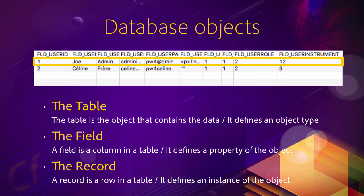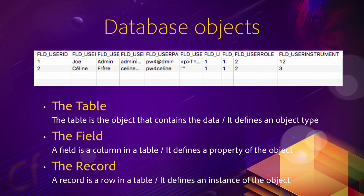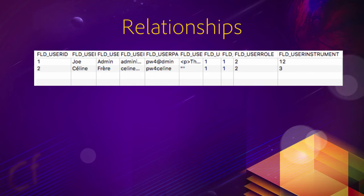A record defines an instance of the object. So in my database here, I have two users, meaning I have two different instances of the user object. Each of those two instances has all the properties of a user, but with different values. What makes a database really special is the fact that inside a database, we actually have more than one such table.